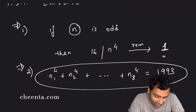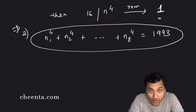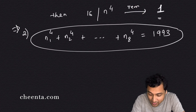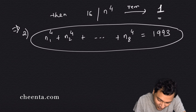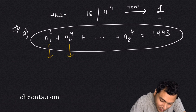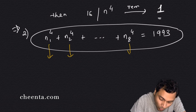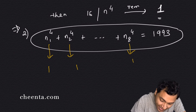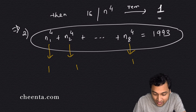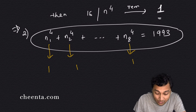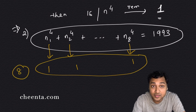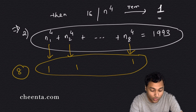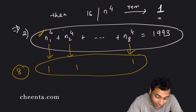The first part is actually the crux of the problem because the second part becomes simple once you do the first part. Why is the second part simple? Well, if each of the odd integers produces remainder 1 when its fourth power is divided by 16, even then the sum of the remainders is at most 8. Some of these n1, n2, ..., n8 could be even.